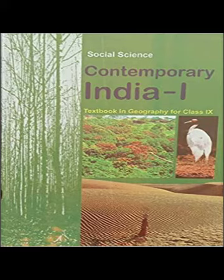These forests cover mostly the southern slopes of the Himalayas and places having high altitude in southern and northeast India. At higher elevations, temperate grasslands are common. At high altitudes — generally more than 3,600 meters above sea level — temperate forests and grasslands give way to alpine vegetation. Silver fir, junipers, pines and birches are the common trees of those forests. However, they get progressively stunted as they approach the snow line, and through shrubs and scrubs they merge into the alpine grasslands. These are used extensively for grazing by nomadic tribes like the Gujjars and the Bakarwals. At higher altitudes, mosses and lichens form part of tundra vegetation.